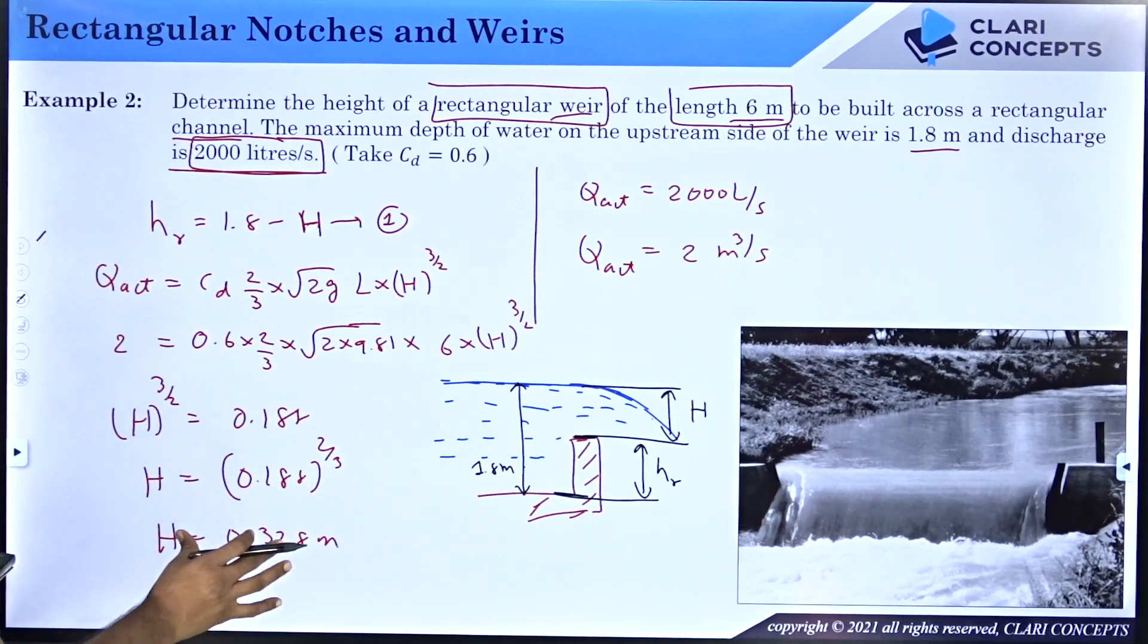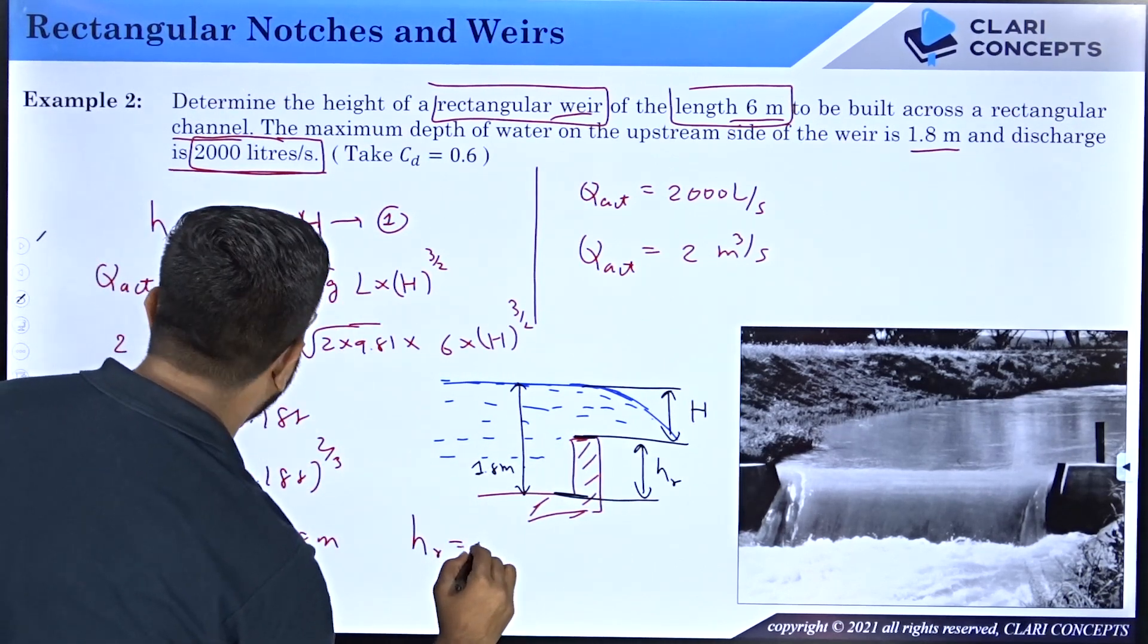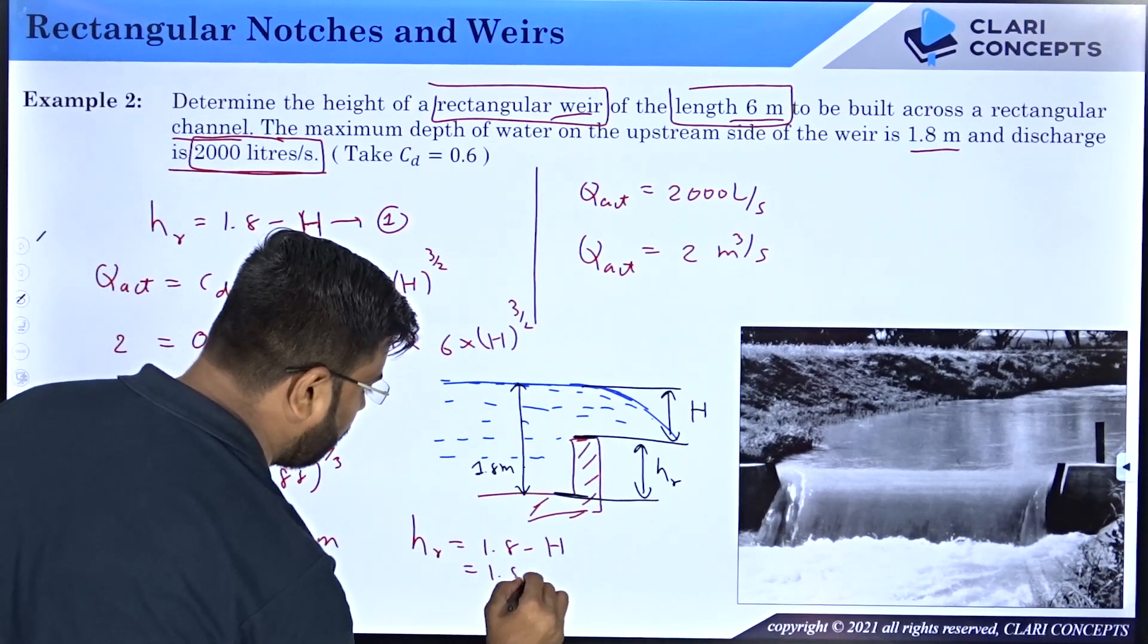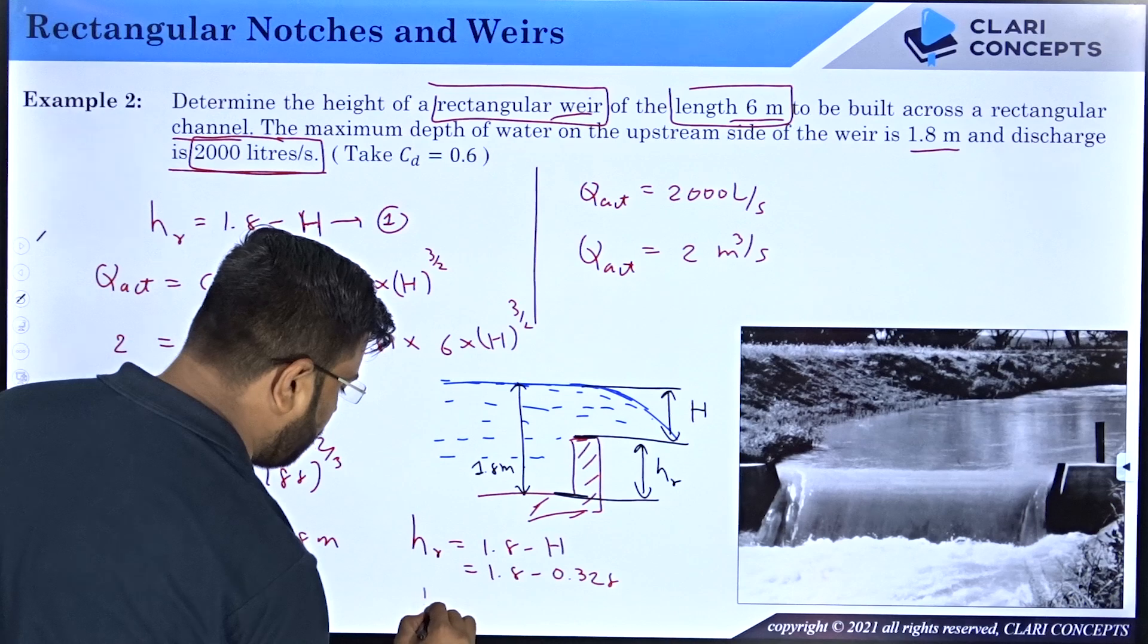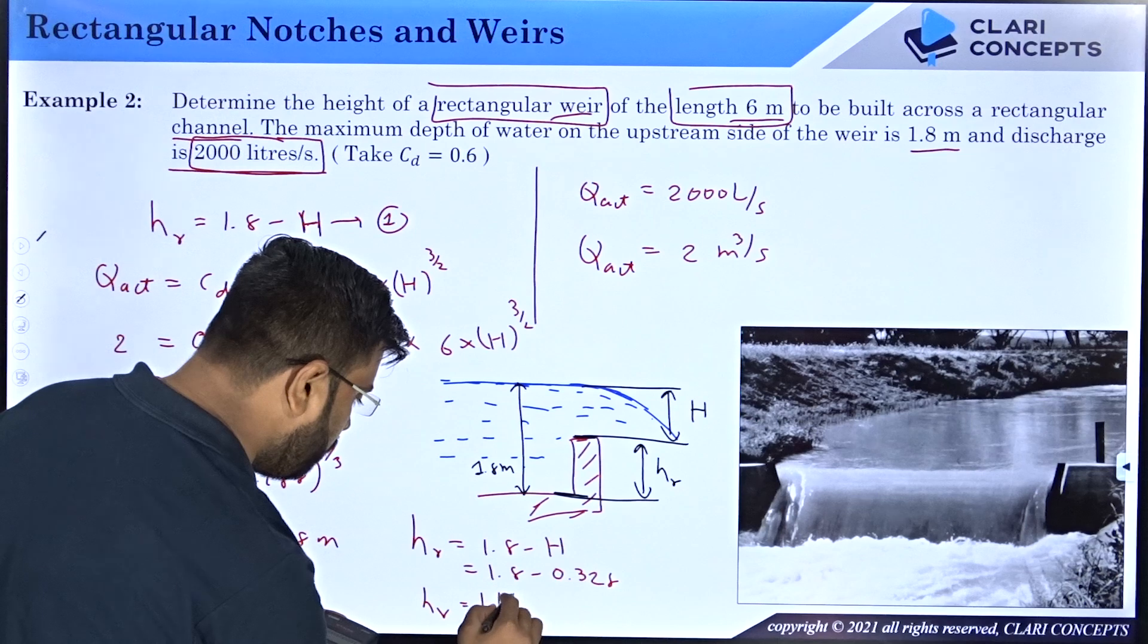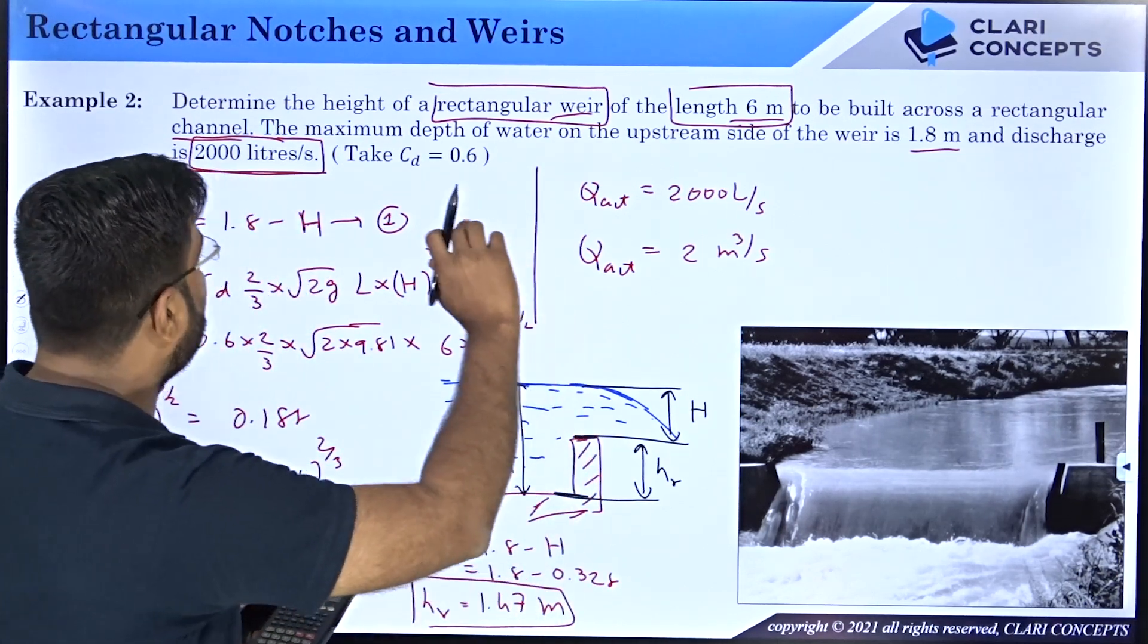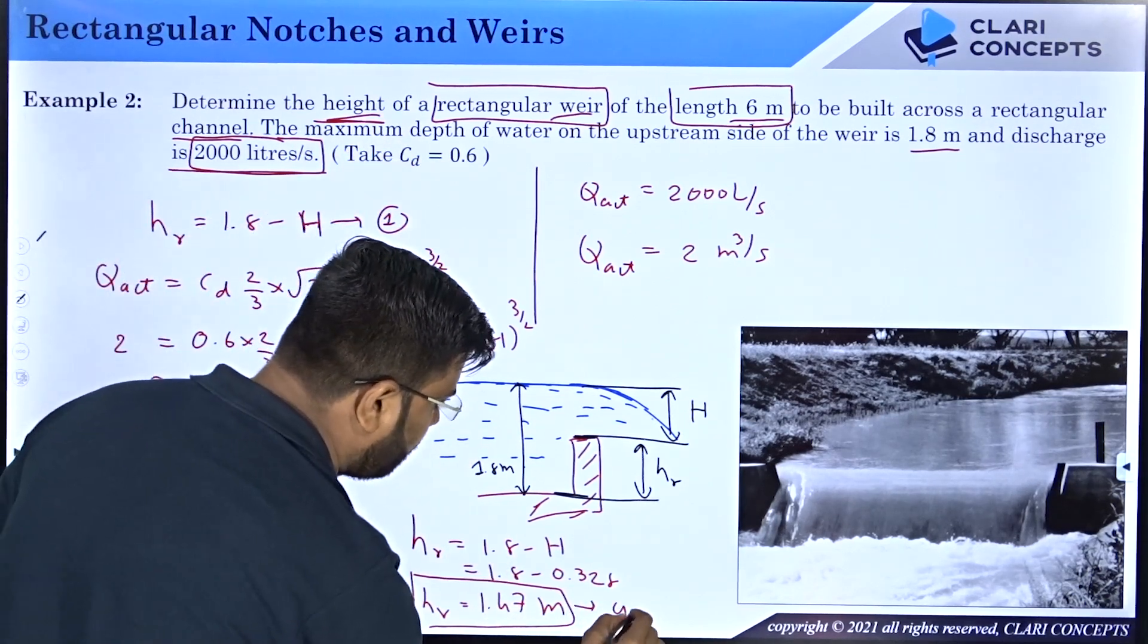So then you can substitute this h over here to get the final hr. So this hr will be equals to 1.8 minus capital H which is 1.8 minus 0.328. So the height of the weir will be, this height will be 1.47 meter. This is the answer.